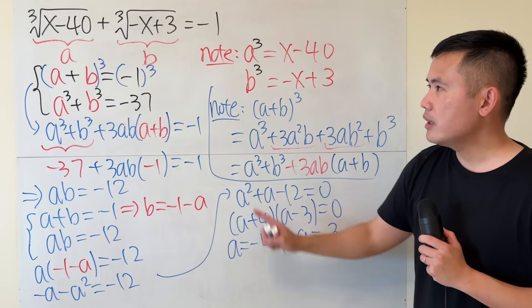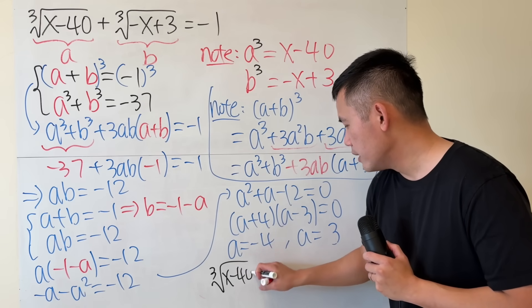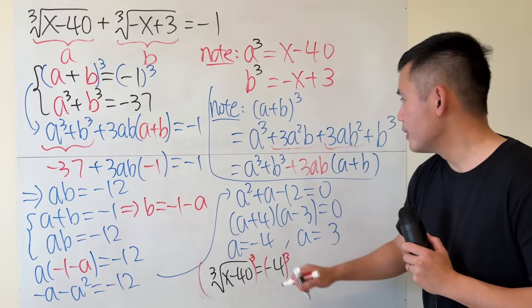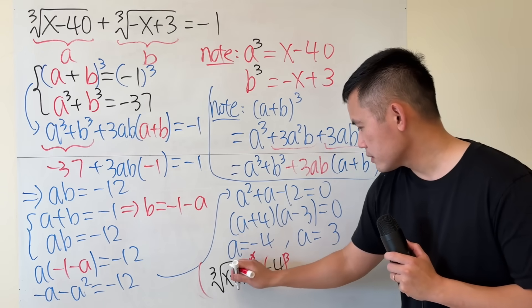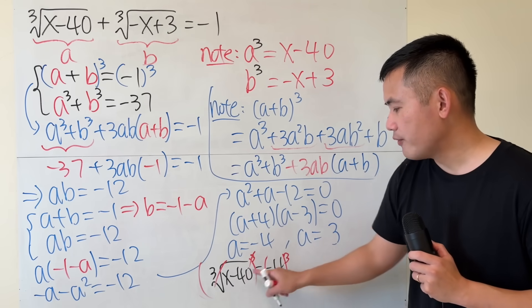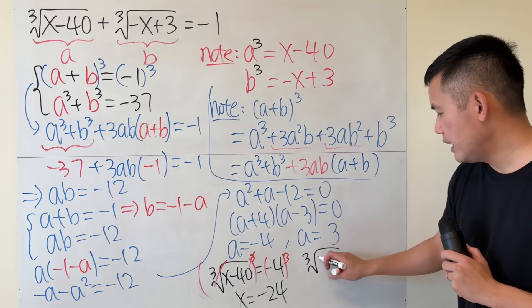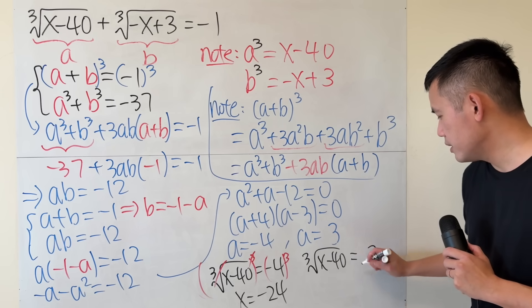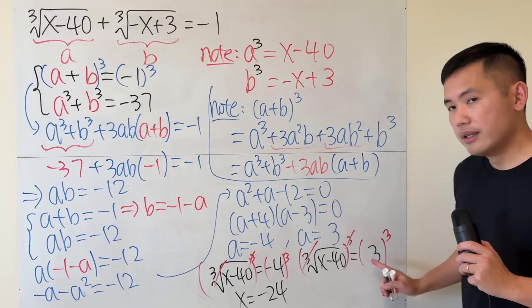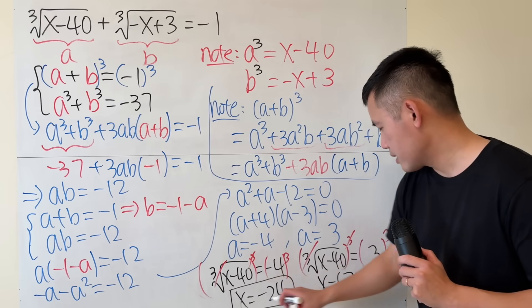So I'm just going to work out from here. And this will tell me that cube root of x minus 40 is equal to negative 4. And then solve it. Raise both sides to a third power. And we will see that it will cancel. So that's negative 64. And I will have to add 40 to it. x will be negative 24. And then do the same thing here. Cube root of x minus 40 being equal to 3. Raise both sides to the third power. Cancel. 27 plus 40. x is 67. And I will tell you that they are both correct.